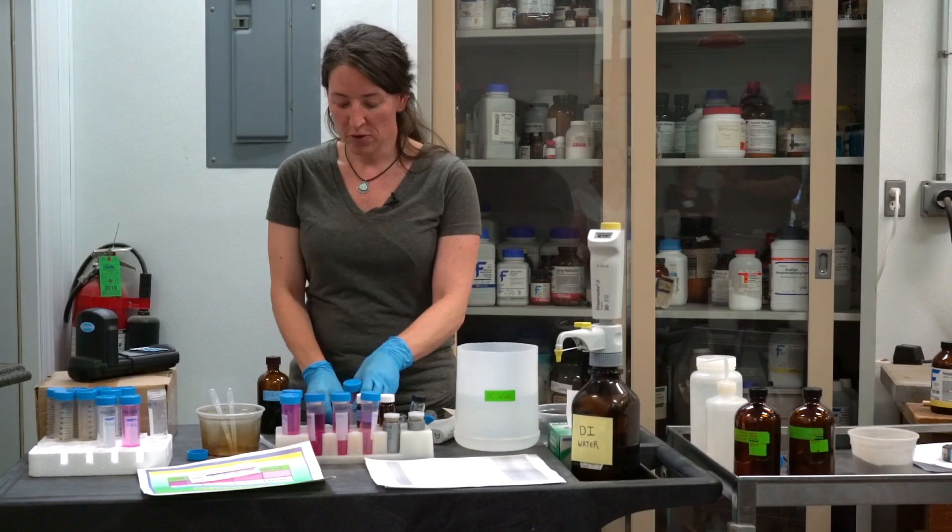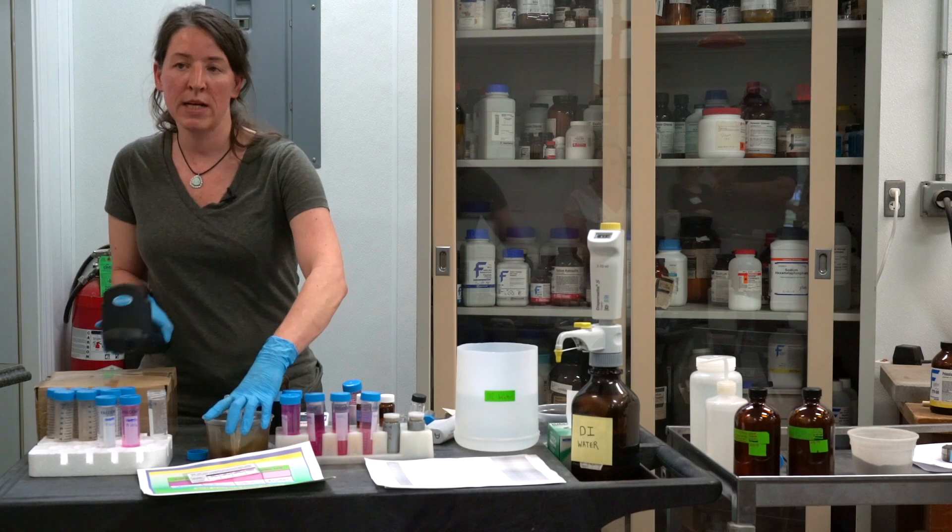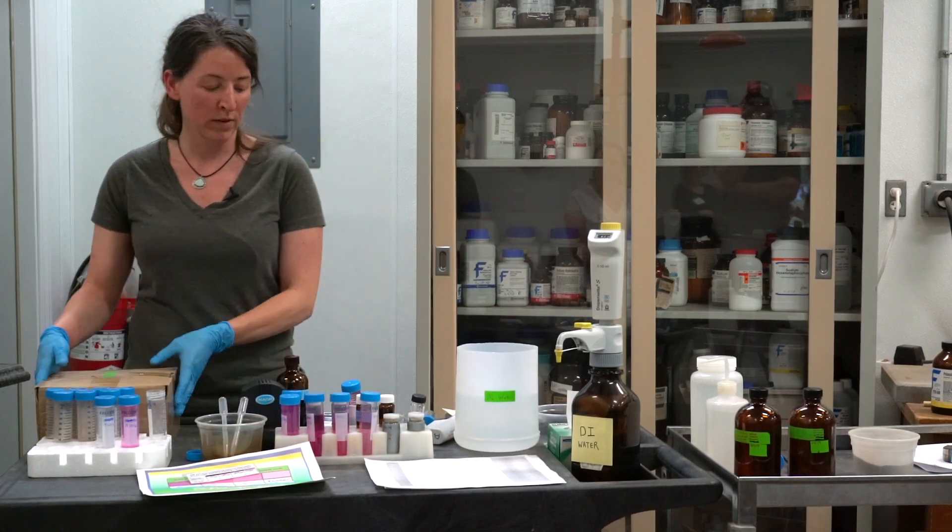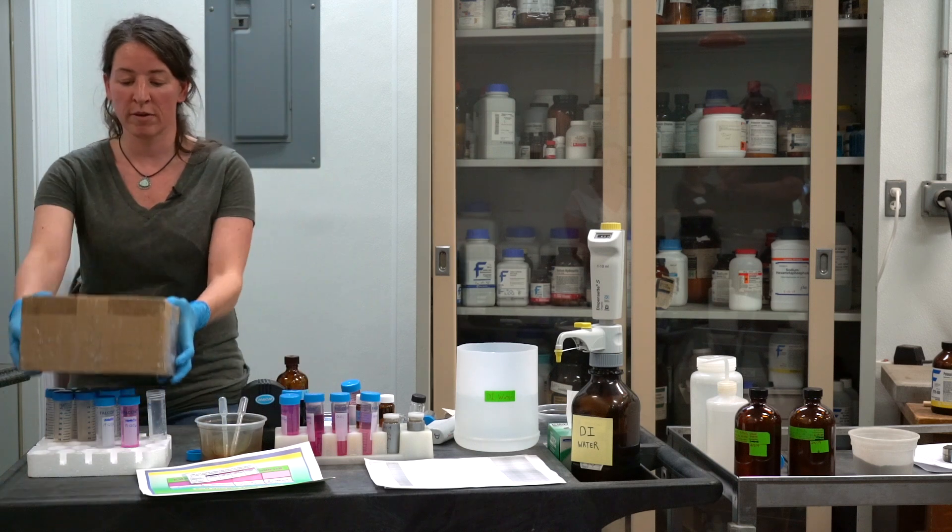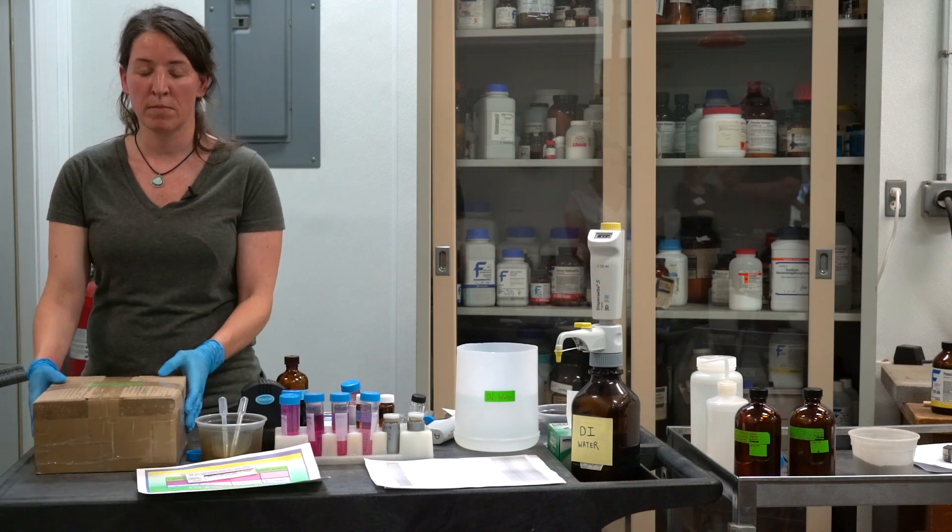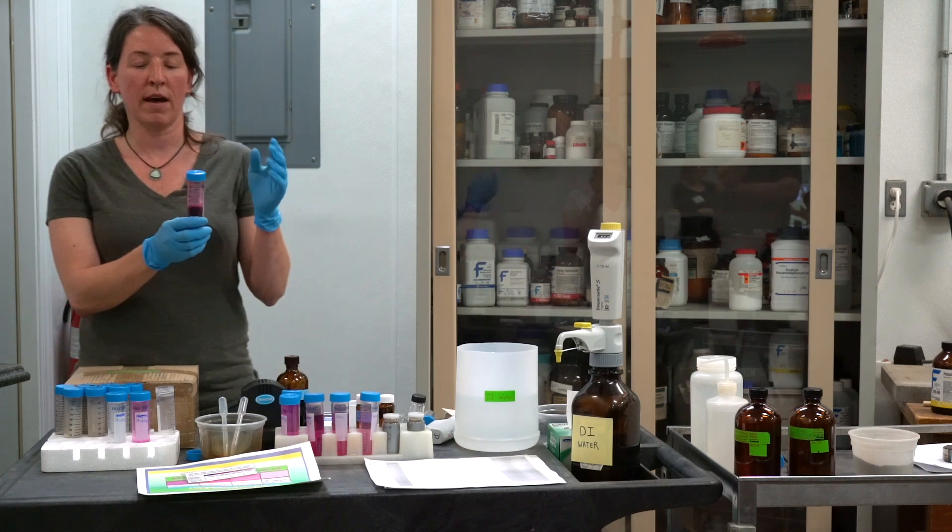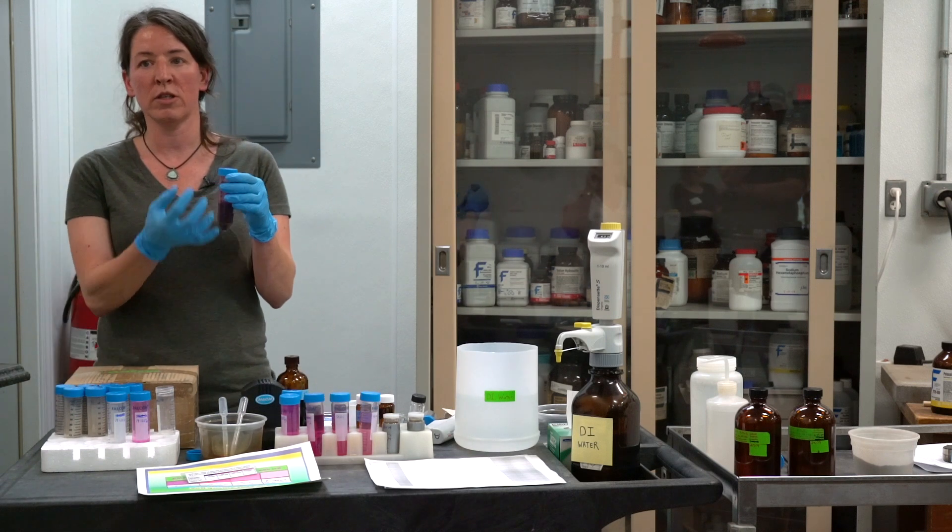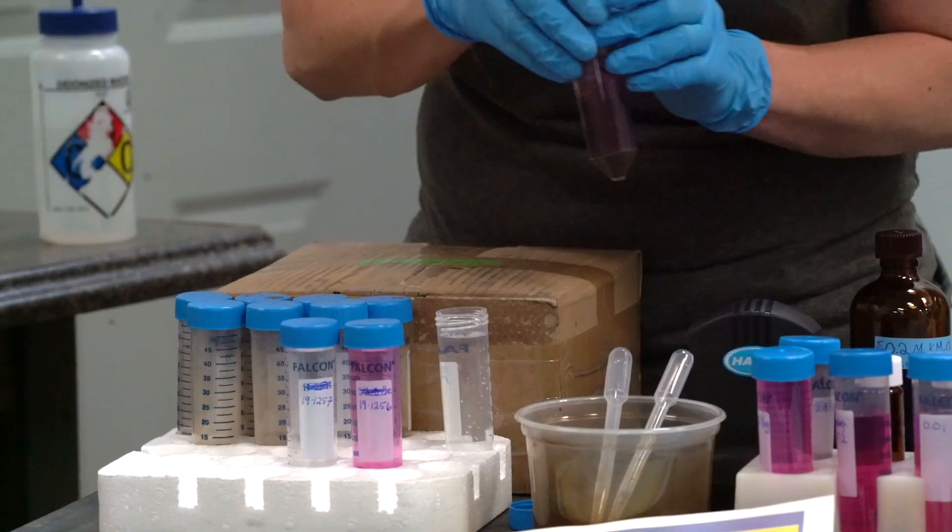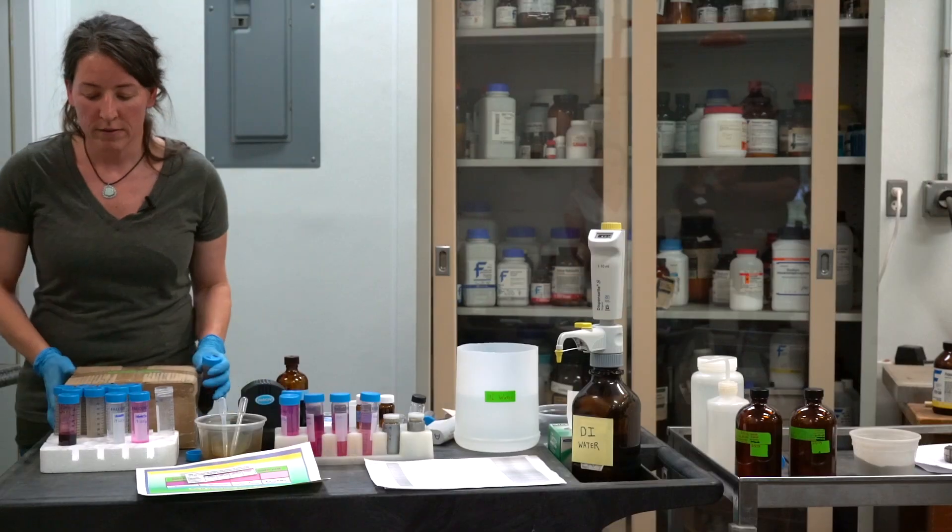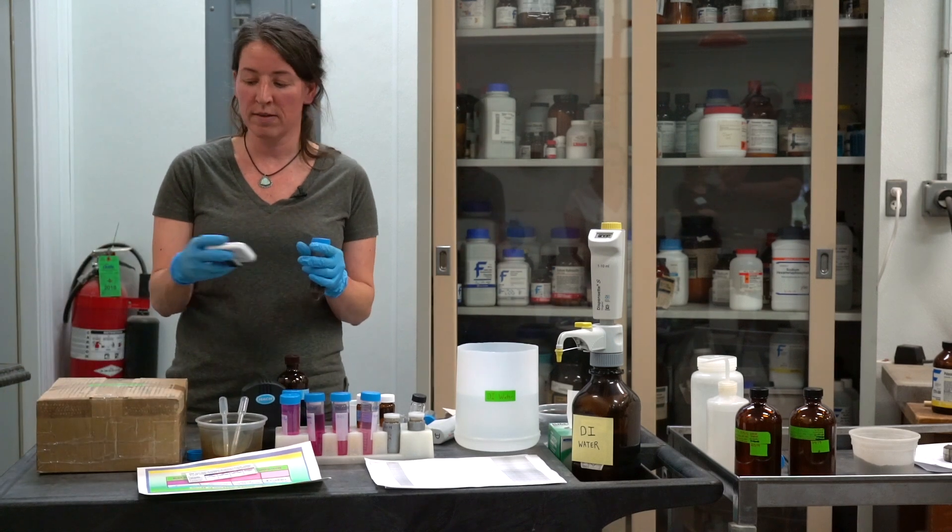Once your two minutes is up, the next is going to be a 10 minute settling time. During this period you want to protect your sample from light. We use a box here, we cover it up and it sits for 10 minutes. What's happening during the settling time is the calcium chloride that we added to the solution is flocculating with the soil and it'll settle out to the bottom.